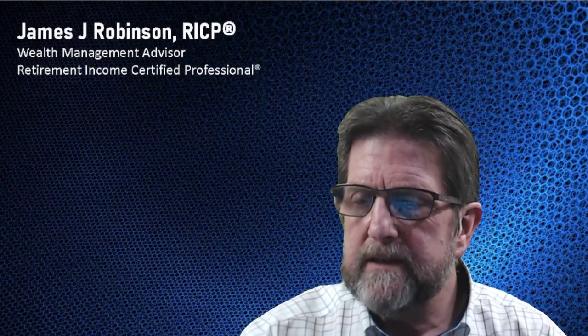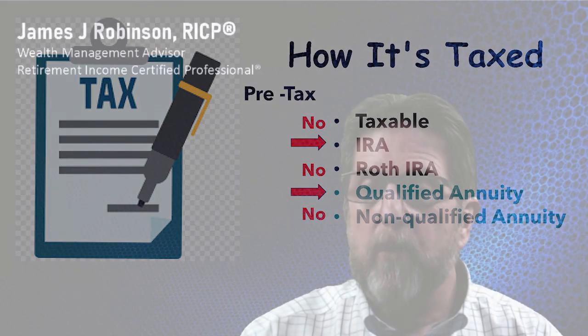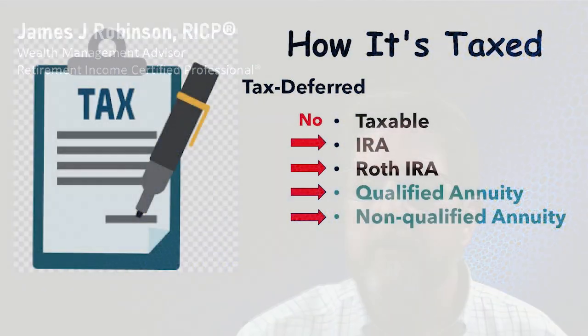A quick overview on these categories for how things are taxed. For investments that go in pre-tax: an IRA, yes; a qualified annuity, yes; the others, no. For growing tax-deferred, once the money's in there, that would apply to an IRA, a Roth IRA, a qualified annuity, and a non-qualified annuity.